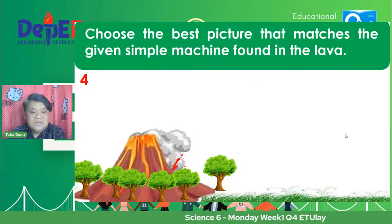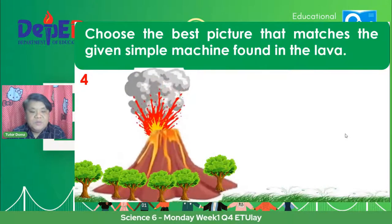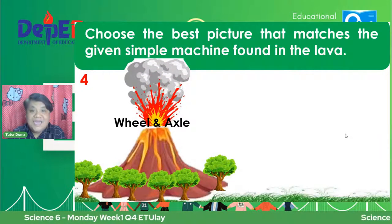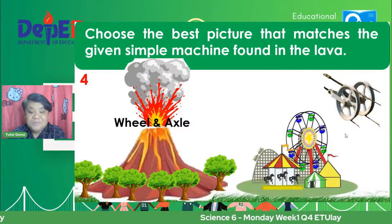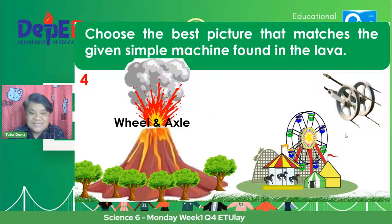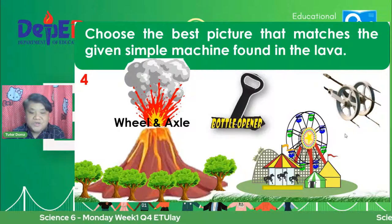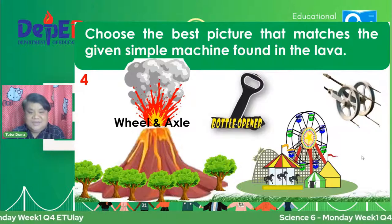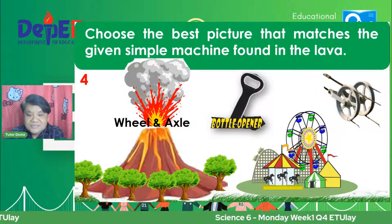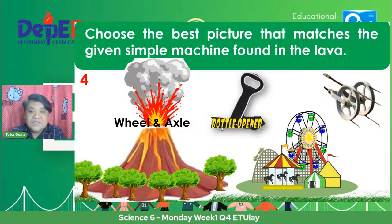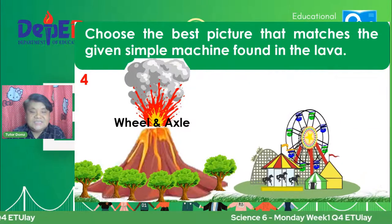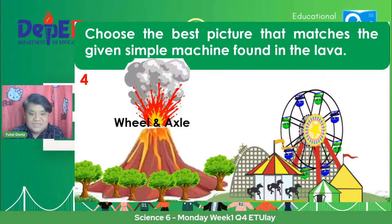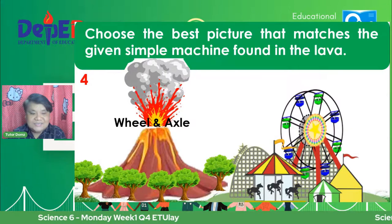Next, another simple machine na nasa lava. It's the wheel and axle. Is it the first picture, second picture, or the bottle opener? Alin kaya dyan ang wheel and axle? And the answer is, of course, yung ferris wheel. That is an example of wheel and axle.